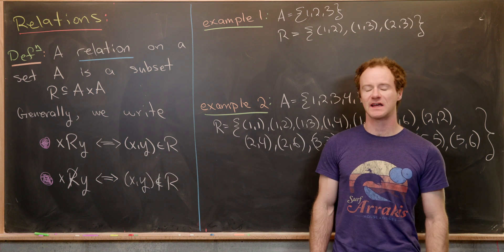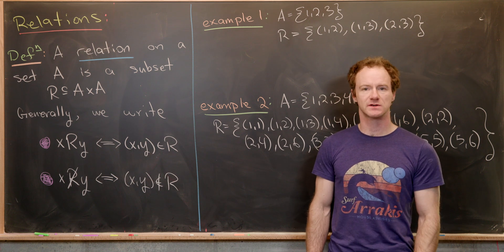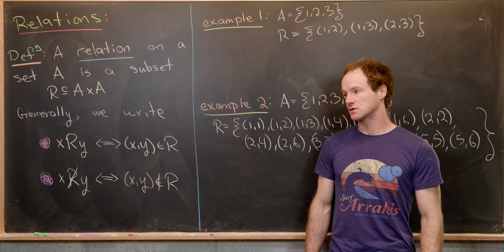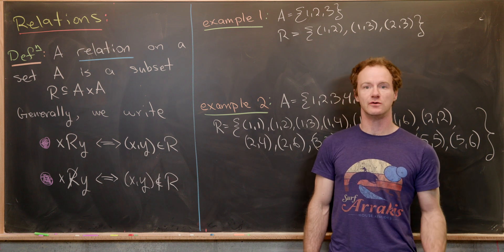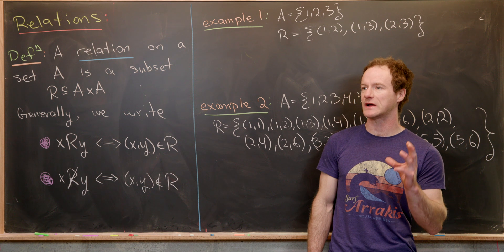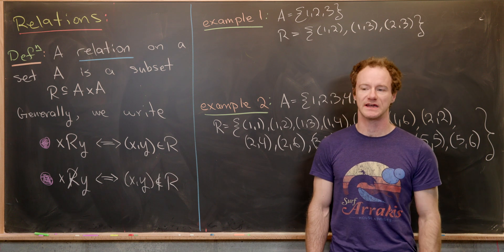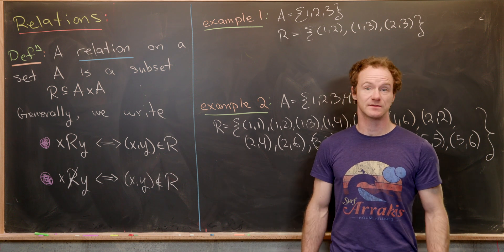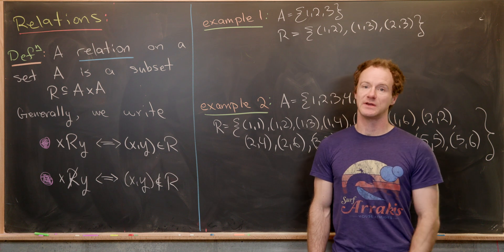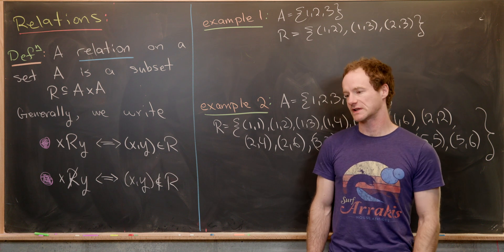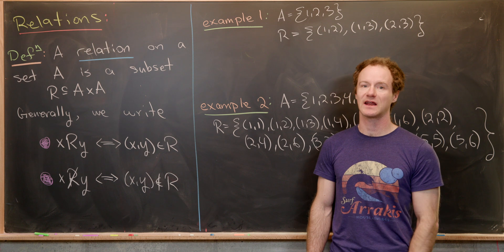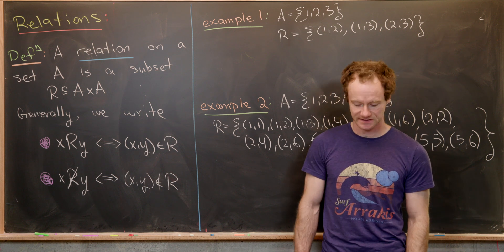Say you've got the set of real numbers; your relationship could be equality. So two is equal to two, but two is not equal to three — you would say that two and two are related. Or you could have an inequality like less than or equal to. Two is less than or equal to three, so two and three are related in that case.